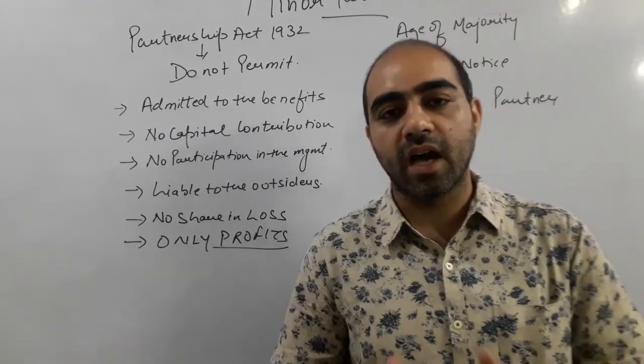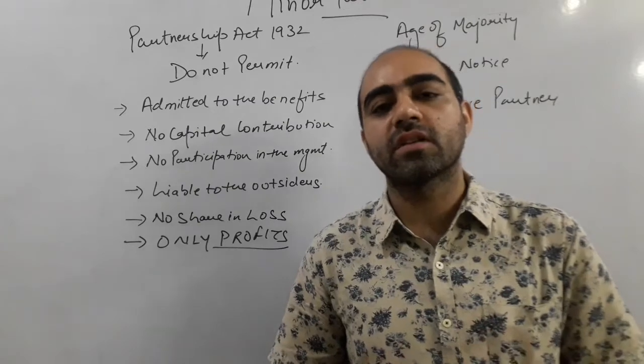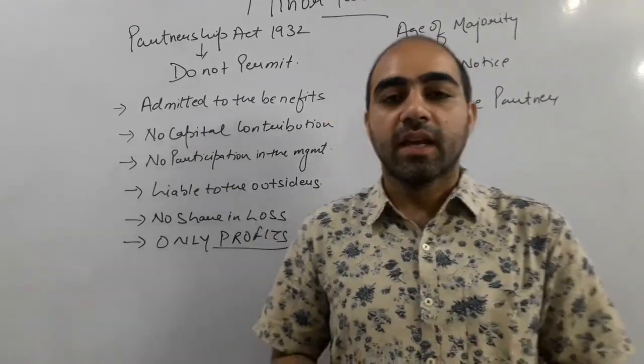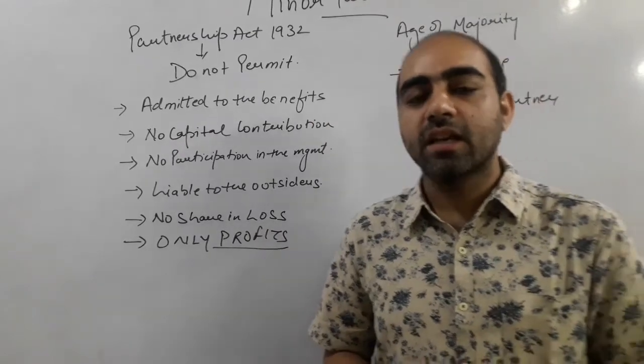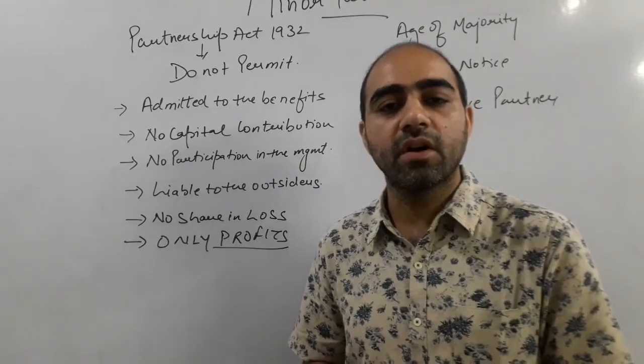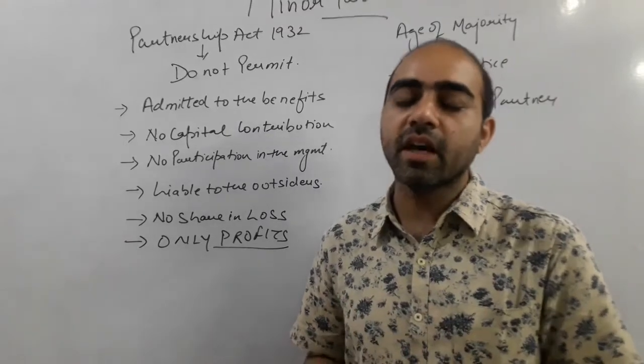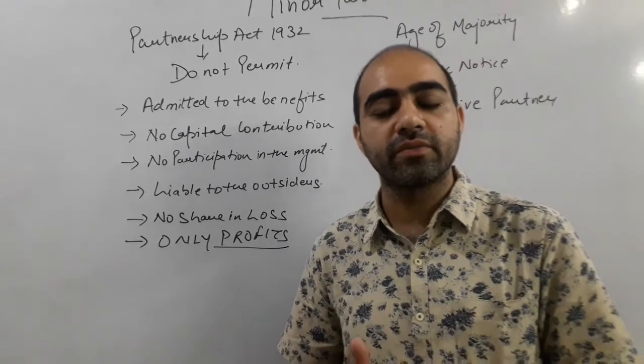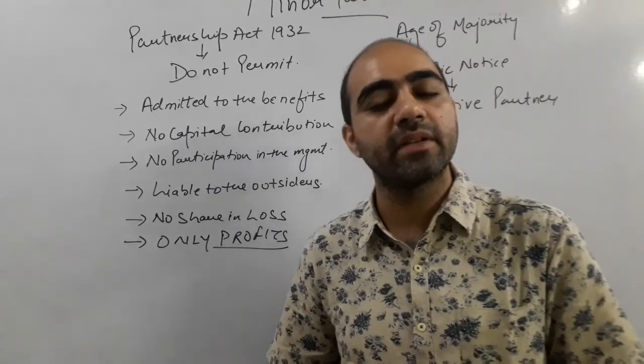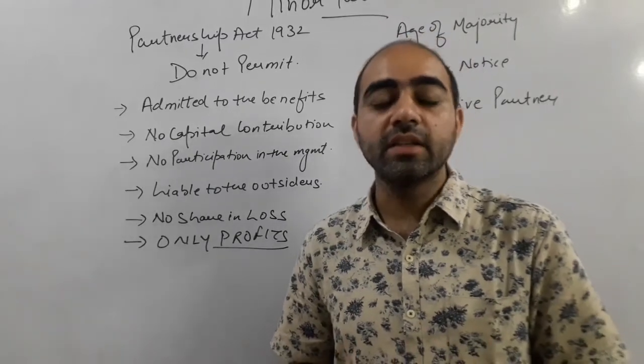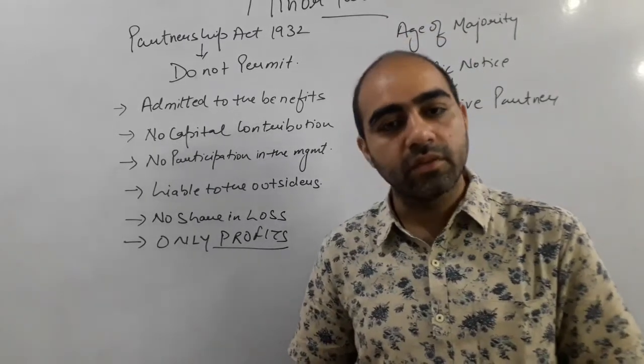Which means a minor partner has privileges of getting just the profits. But there is also a concern as a minor partner: if they have taken any liability from outsiders, in regard of themselves or in regard of the firm, then they are liable to the outside people for those payments or funds, because they have done according to their own will and wish.